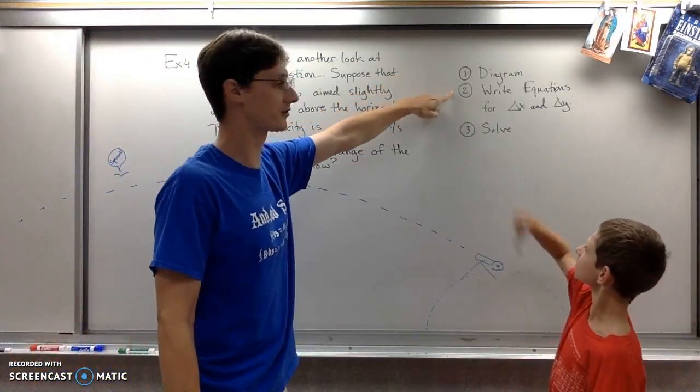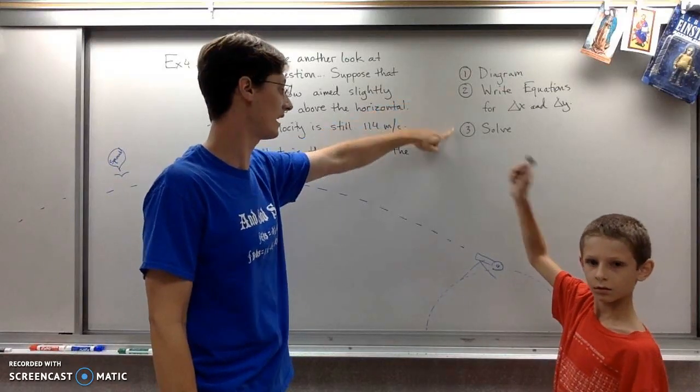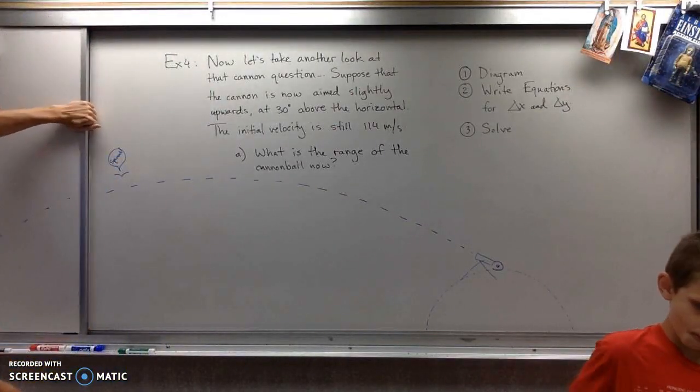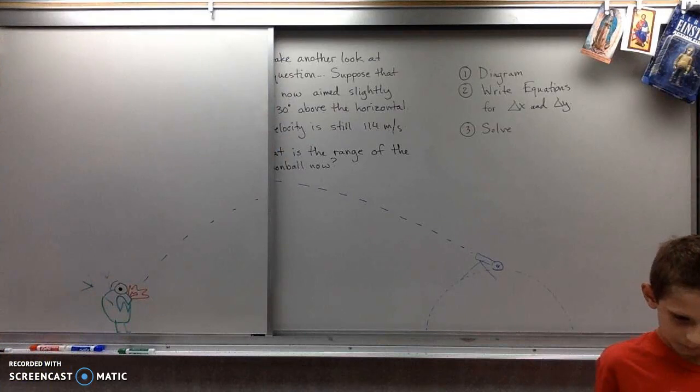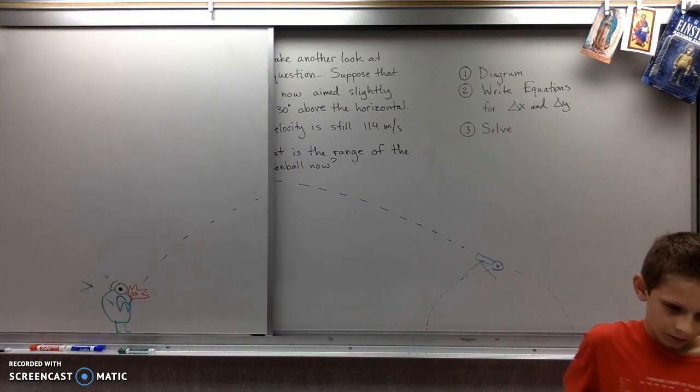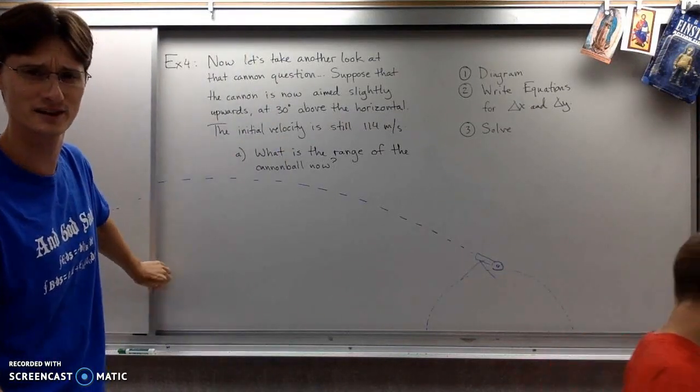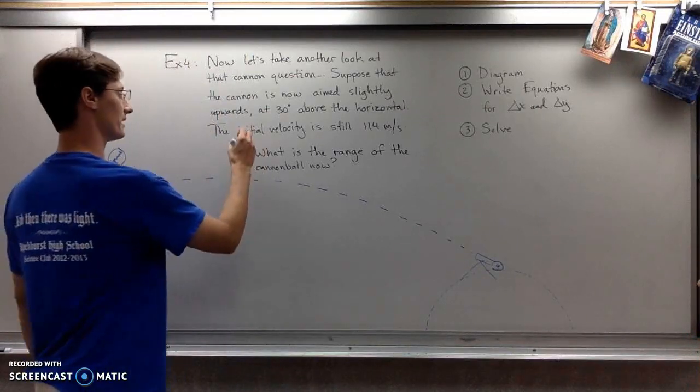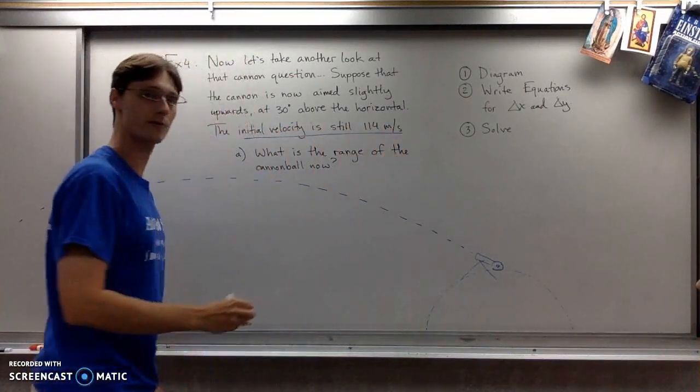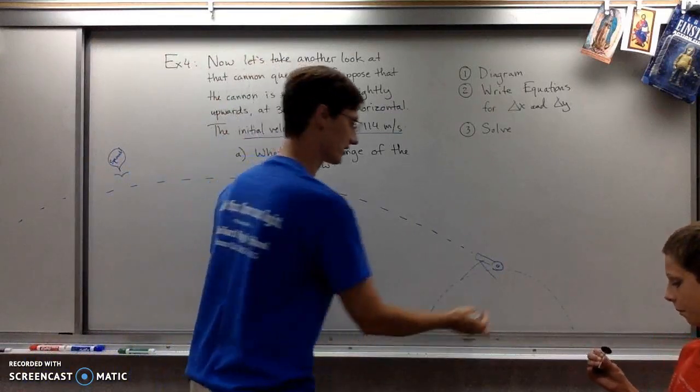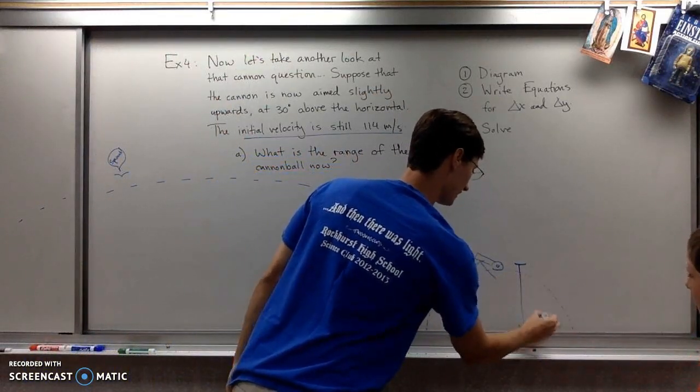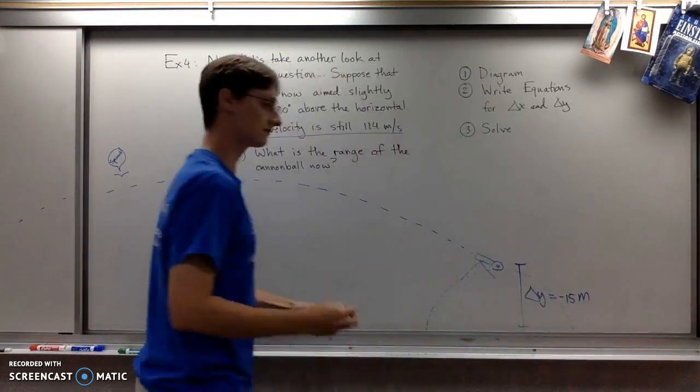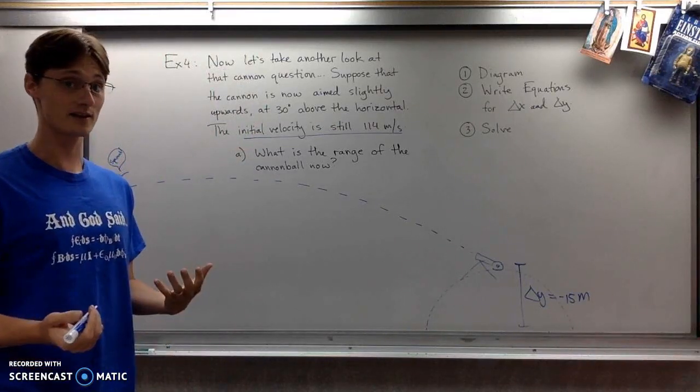Same steps: diagram, equations for delta x and delta y, then solve. The cannon goes so far you can't see the end of the parabola. There's always a monster at the end of the parabola. Some things stay the same: initial velocity is still 114 meters per second, and y displacement is still negative 15 meters.